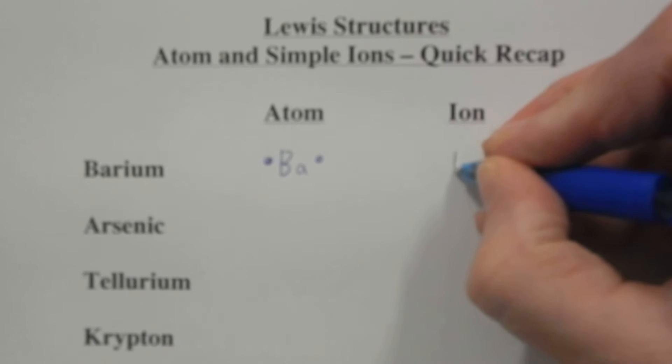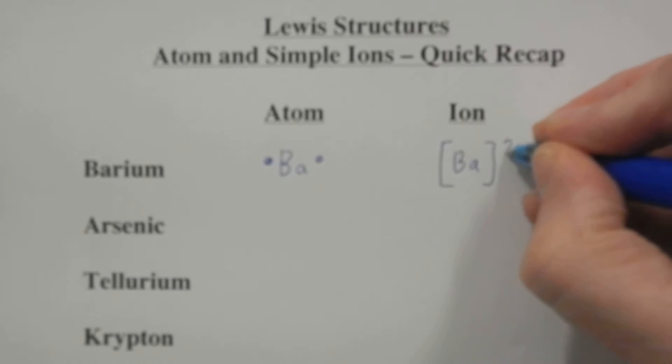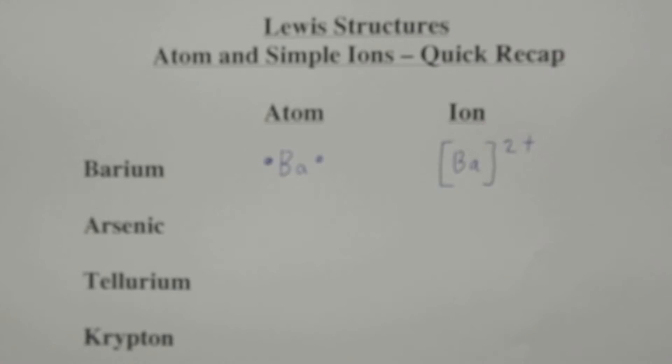And when it becomes an ion, barium wants to lose two electrons to be like krypton. And so we write down BA, it's a metal, and it loses those two outer electrons and has a 2 plus charge, square brackets, charge.